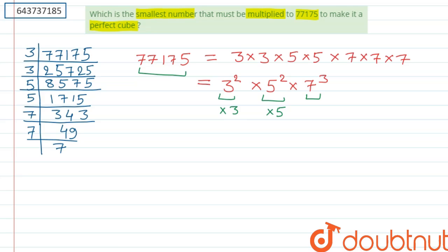Therefore, the required number to multiply 77175 to make it a perfect cube is 3×5, that is equals to 15. And if we multiply 77175 with 15,